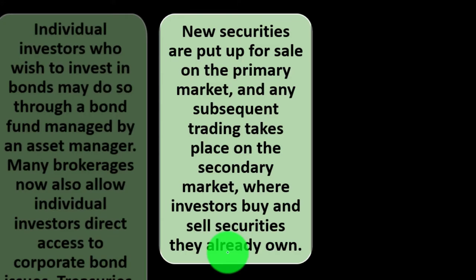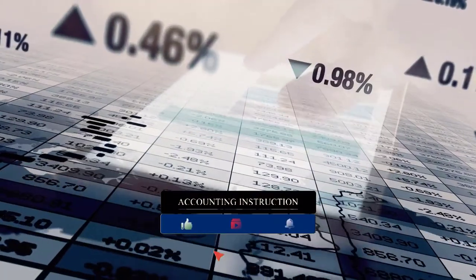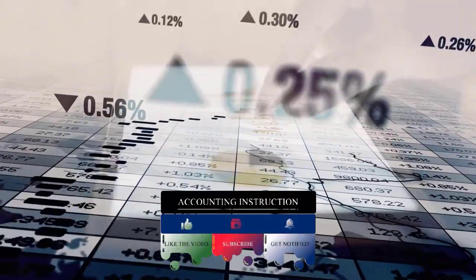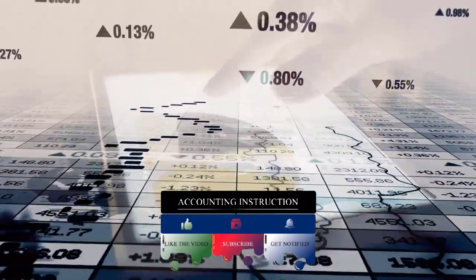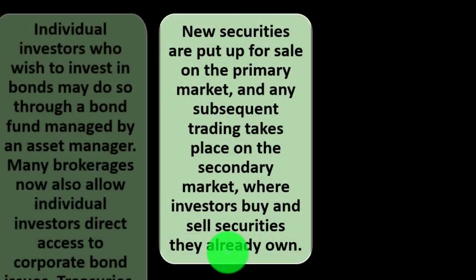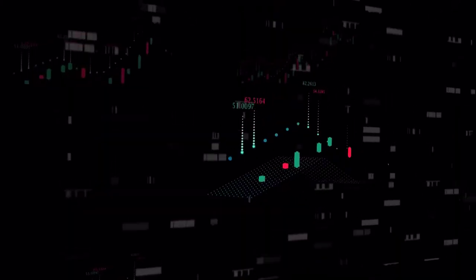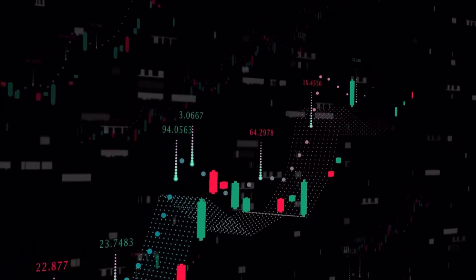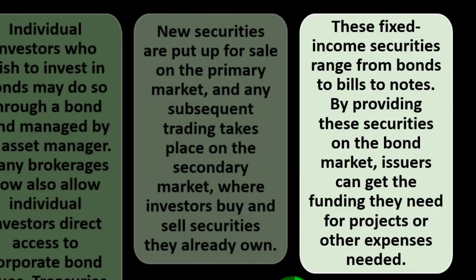New securities are put up for sale on the primary market, and any subsequent trading takes place on the secondary market. In the bond market, the primary market means buying bonds directly from the issuer — be that the government or a corporation. On the secondary market, bonds are already issued and are sold from one investor to another, not directly from the issuer. These fixed income securities range from bonds to bills to notes. By providing these securities to the bond market, issuers can get the funding they need for projects or expenses.